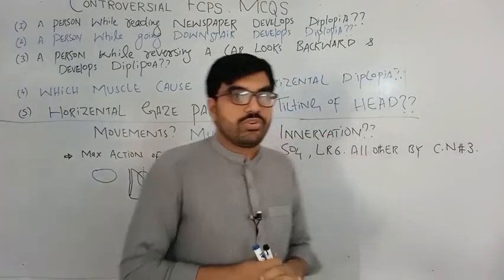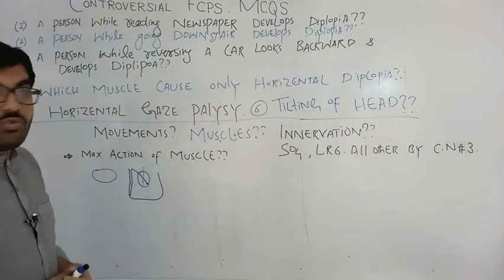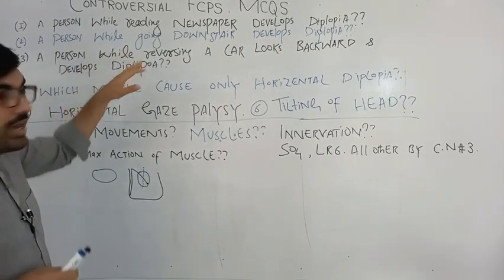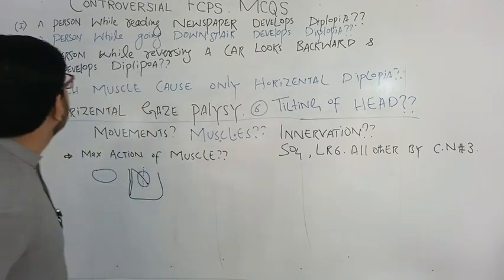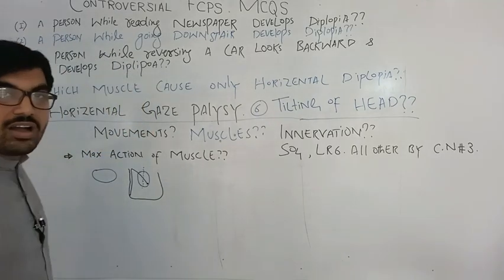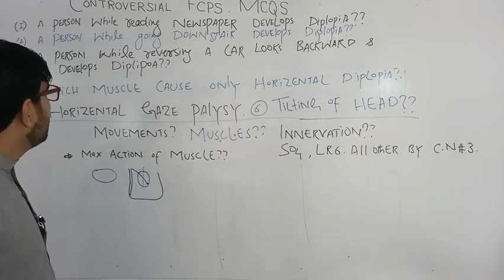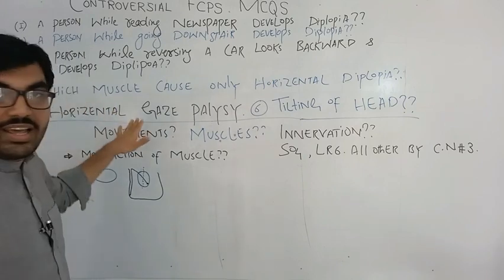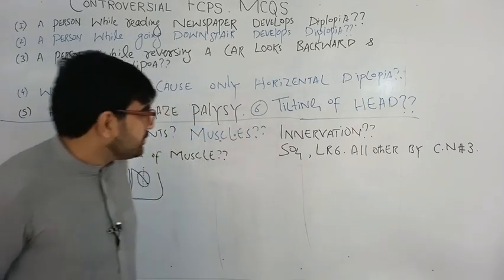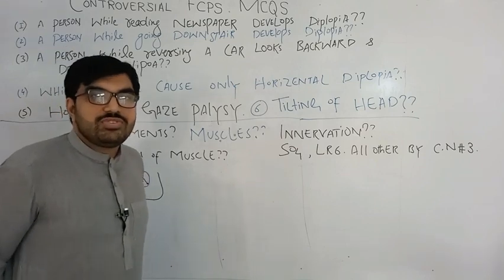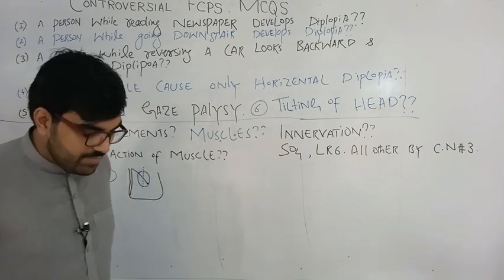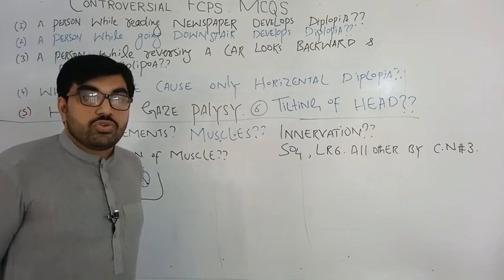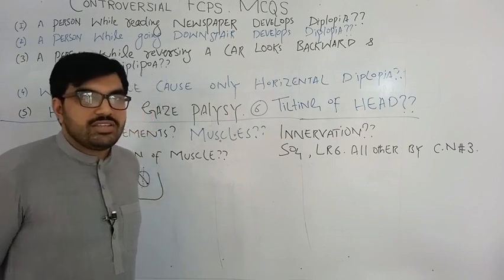These are controversial MCQs: a person while reading a newspaper develops diplopia; a person while going downstairs develops diplopia; a person while reversing a car looks backward and develops diplopia; which muscle causes only horizontal diplopia, horizontal gaze palsy, and tilting of the head? These MCQs repeat again and again, and we should know the basic concepts behind them.